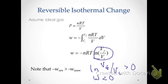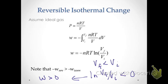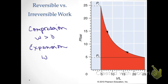In a compression process, V_final is less than V_initial, so the natural log of V_f over V_i is less than zero, meaning work is greater than zero. This is because the surroundings are doing work on the system during compression. To summarize: compression means the surroundings do work on the system and W > 0; expansion means the system does work on the surroundings and W < 0.